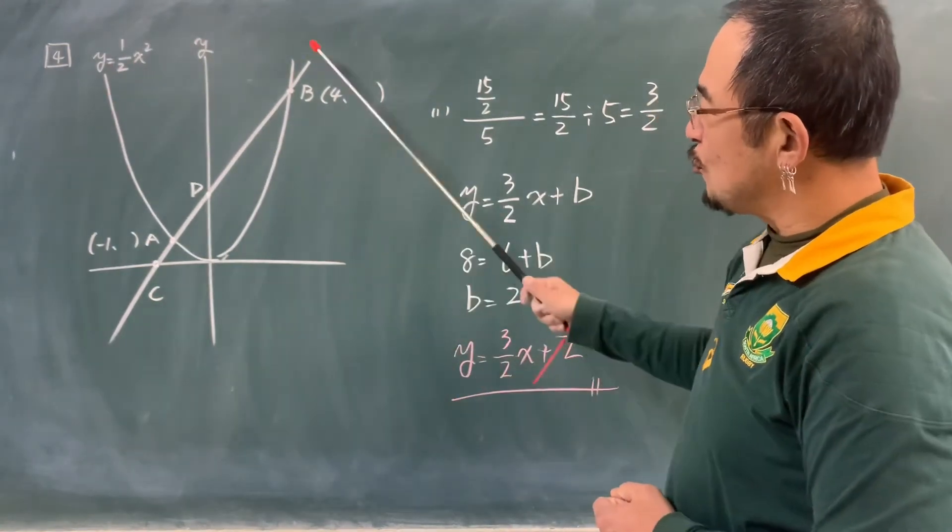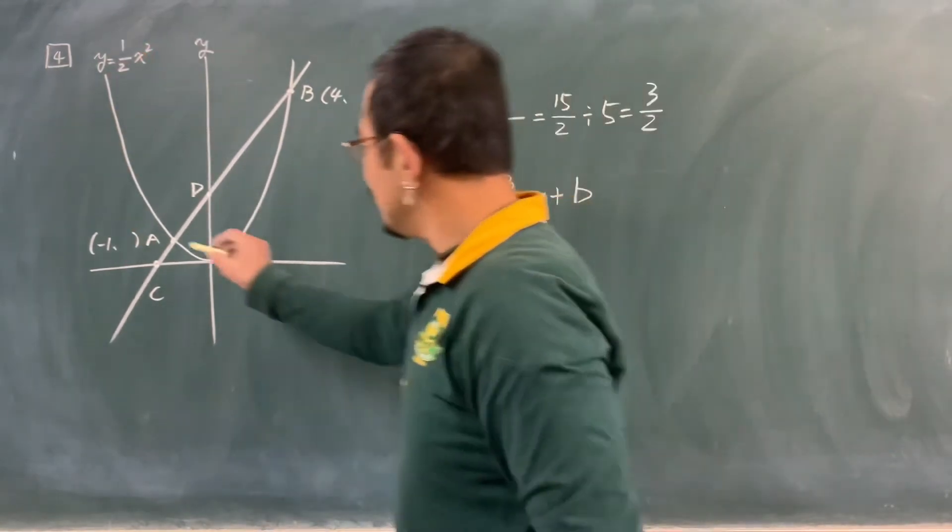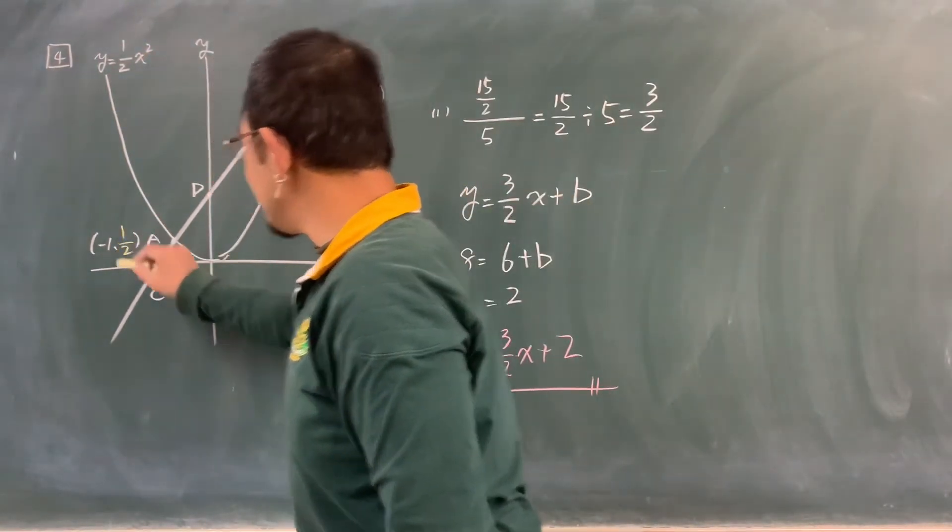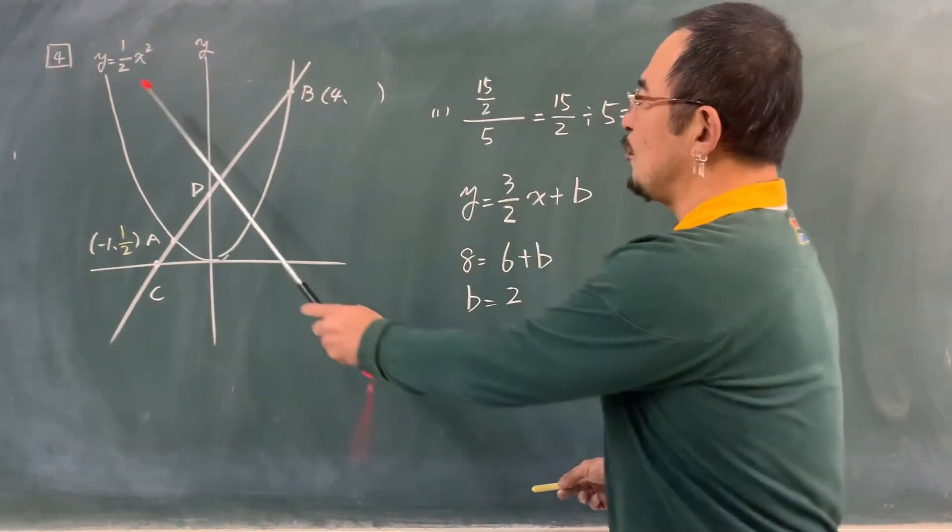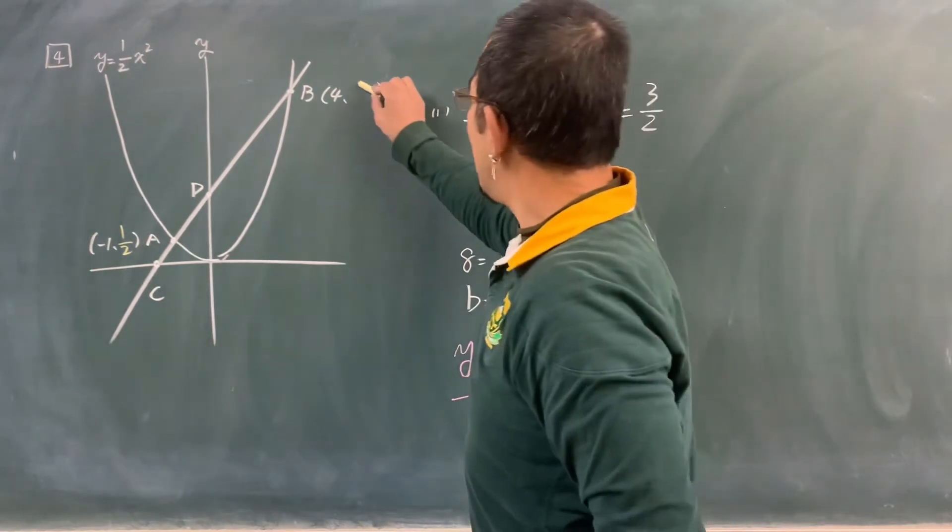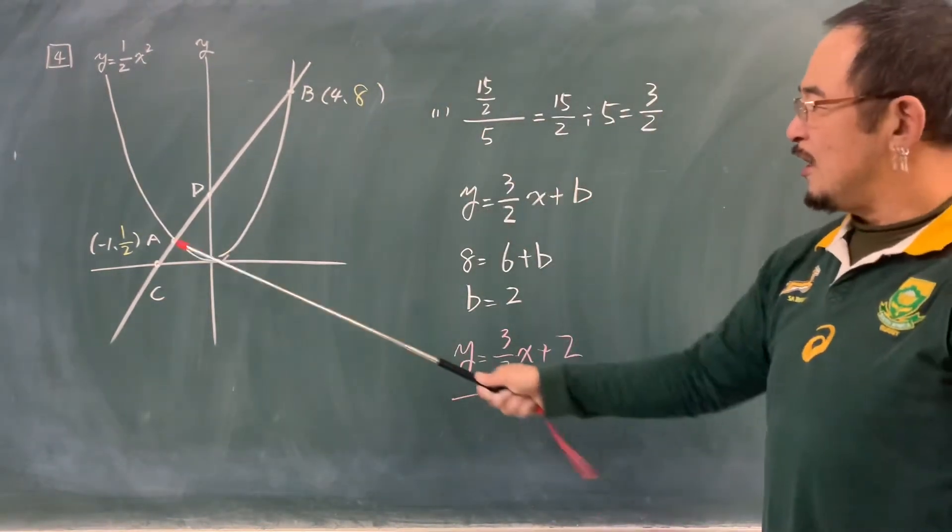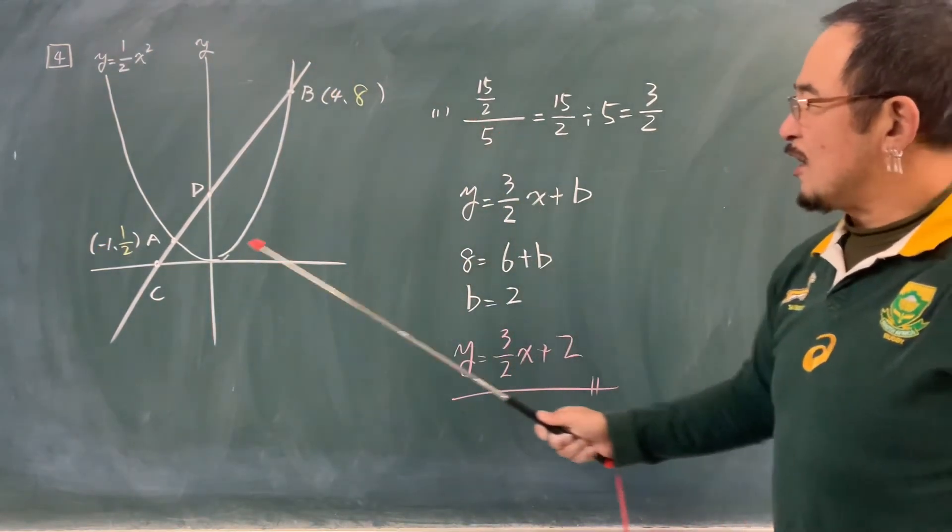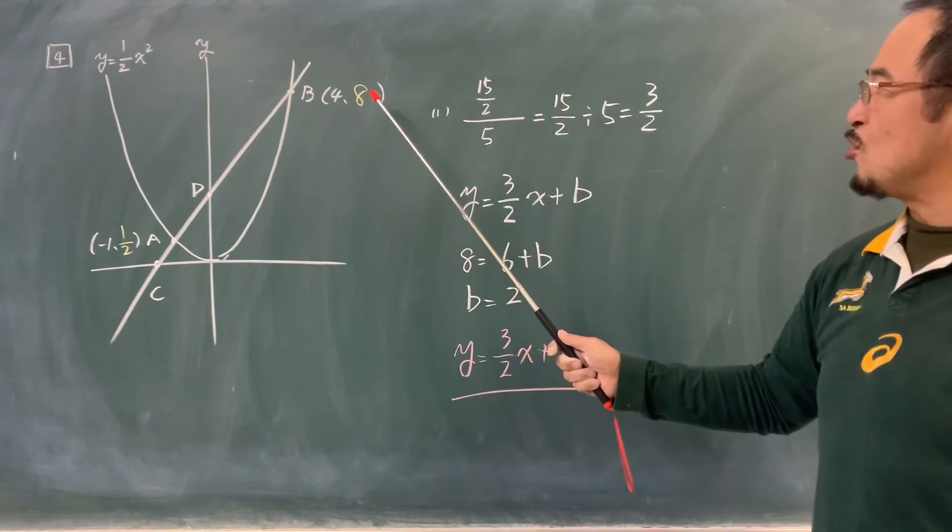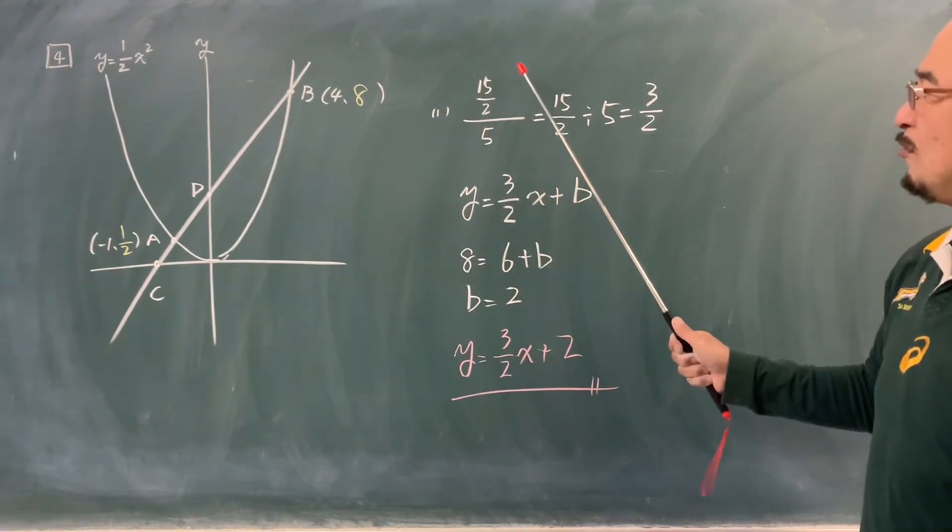4番です。yイコール2分の1x2乗のグラフ上にx座標マイナス1の点Aここに、マイナス1代入しますy座標2分の1ですね。からx座標が4の点b、これも16の2分の1、8。この2点を通る直線の式を求めなさいということで、xの増加量マイナス1から4は5増加ですね。から2分の1から8増加量は2分の15。分数でも気にせずxの増加量分のyの増加量。